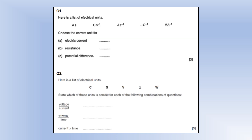Here is a list of electrical units. 1 amp is a coulomb per second. Resistance is a volt per amp. Potential difference is a joule per coulomb. Voltage divided by current is resistance, so that's an ohm. Energy divided by time is power, so that's a watt. Current times time is a coulomb, assuming the current is constant.